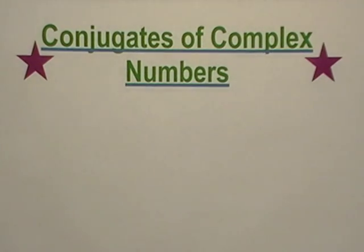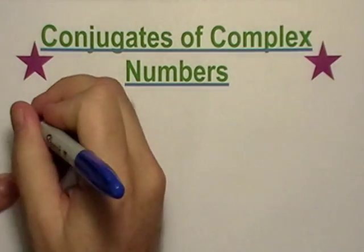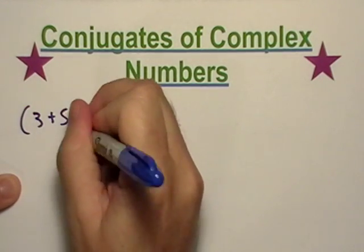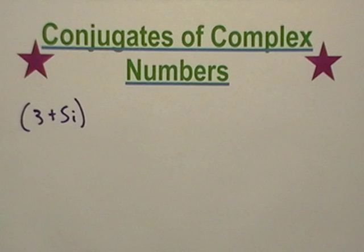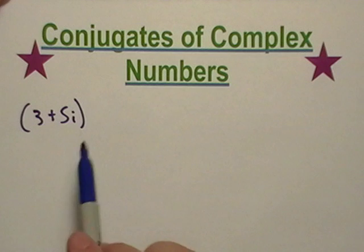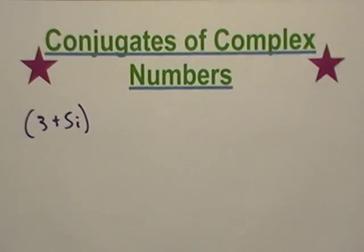Okay, conjugates of complex numbers. A conjugate - let me invent a complex number real quick. Okay, there's a complex number. The real part is three, the imaginary part is 5i, and we could graph this.